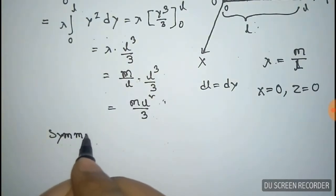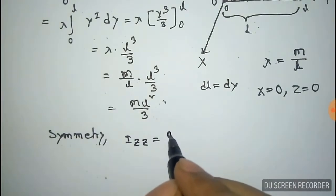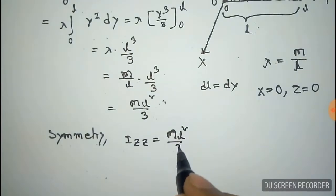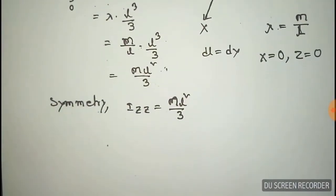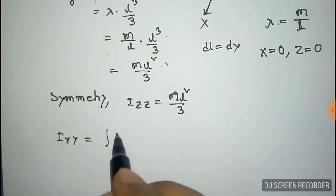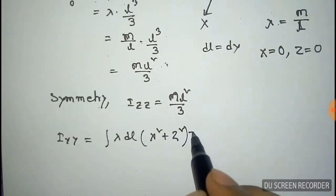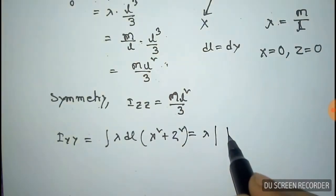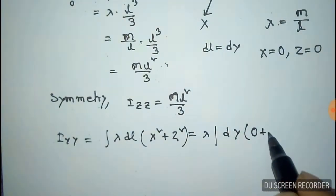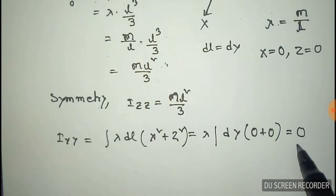From symmetry you can also calculate the moment of inertia along z axis and it will be also m L square by 3. And moment of inertia along y axis, since x and z both are 0, this will be equal to 0.